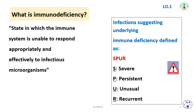Infections suggesting underlying immune deficiency are defined by the acronym SPUR: S means severe, P means persistent, U means unusual, and R means recurrent.